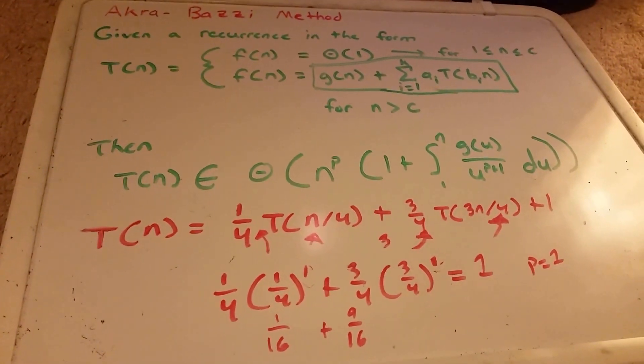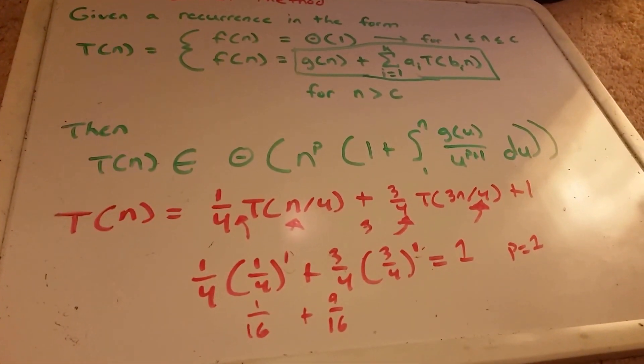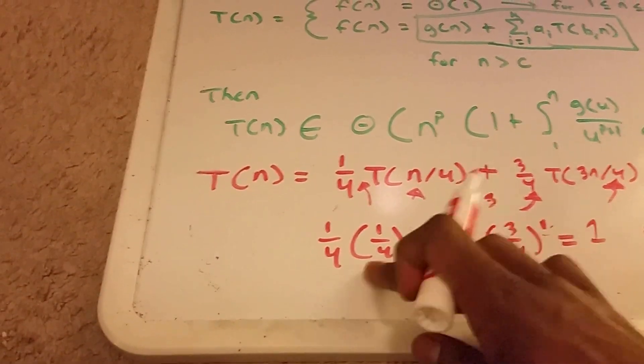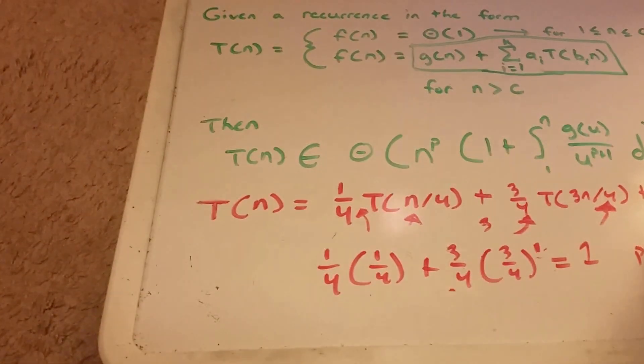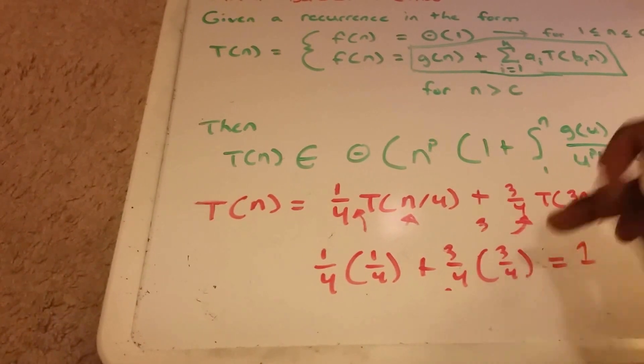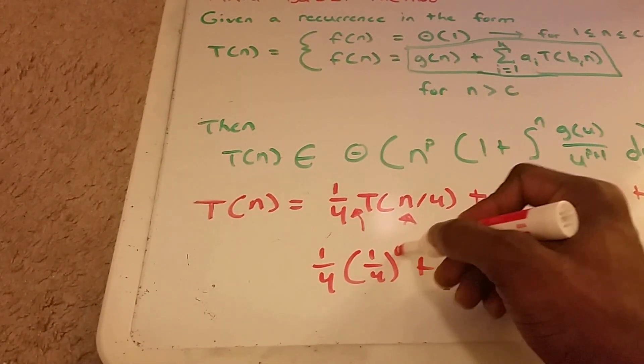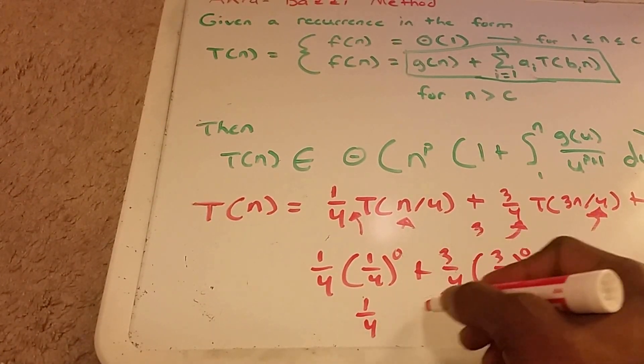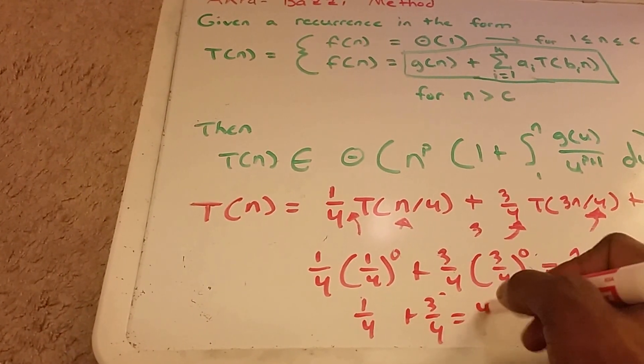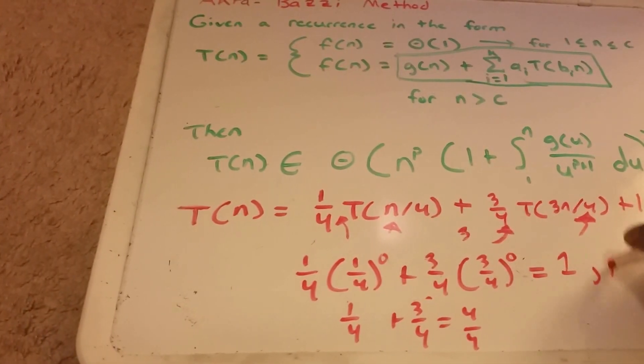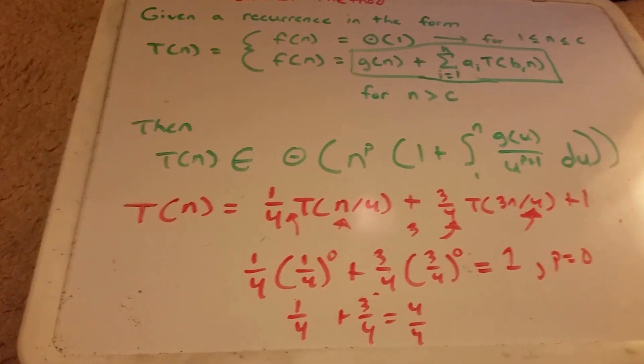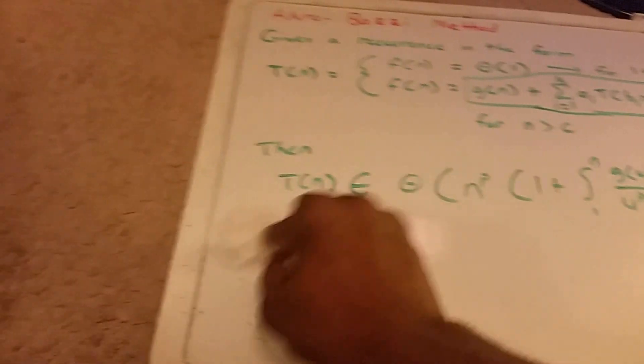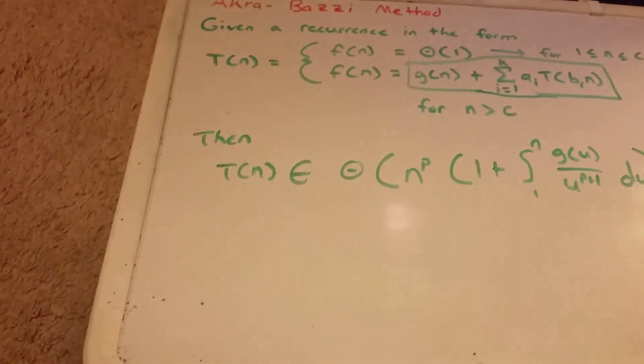So maybe not 1. Let's try another one. P does not equal 1. Let's try 0. So now what we get is 1 fourth plus 3 fourths. Ah, so our p equals 0. All right. So I'm going to go ahead and erase some of this here.